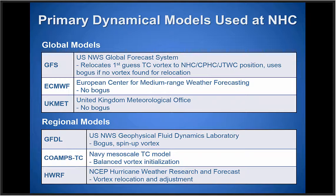Here's an outline of the primary dynamical models used at NHC for forecasting track. The global models include the GFS, ECMWF, and Met Office global model. We also use three main regional models: the GFDL, a regional hurricane model developed by the GFDL lab in New Jersey that's been around about 20 years; the COAMPS-TC, the U.S. Navy's mesoscale TC model; and the HWARF, around for about 10 years — the NCEP regional hurricane model. Those are the six main dynamical models we use for track.